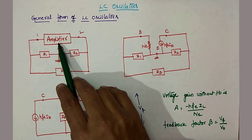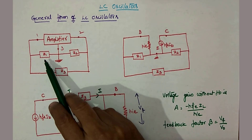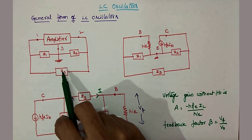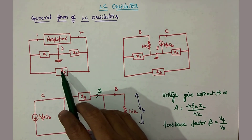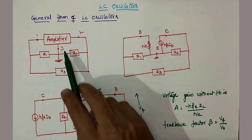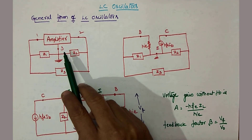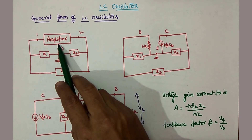This general form of LC oscillators consists of an amplifier and a feedback network. The combination Z1, Z2, Z3 forms a feedback network — meaning Z1, Z2, Z3 is totally an LC circuit that will produce oscillations. Those oscillations will be amplified by the amplifier.